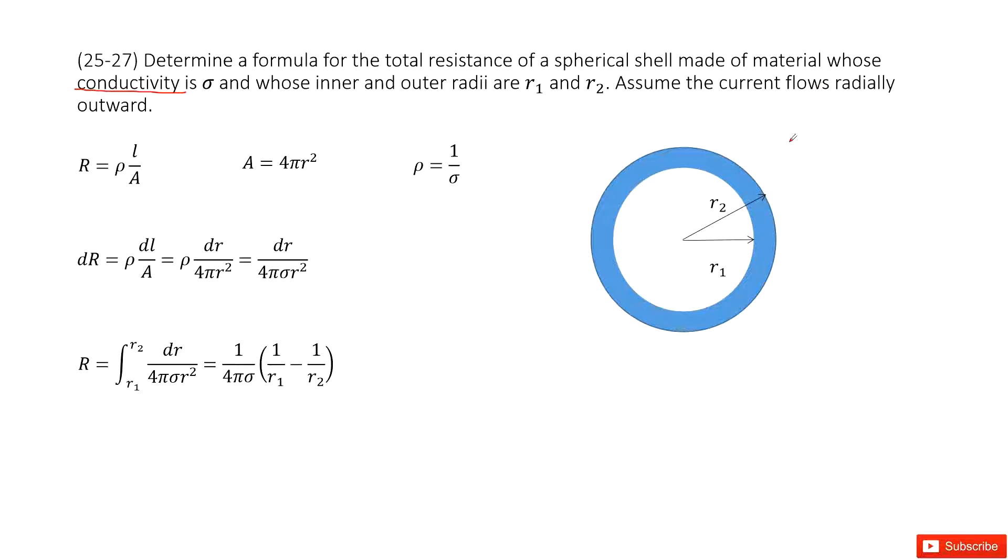Assume the current flows radially outward, so the current flows this way. We need to find the resistance. How can we do that?